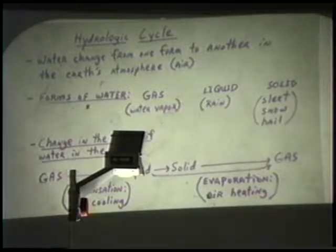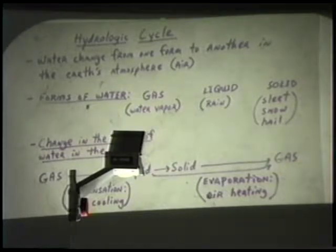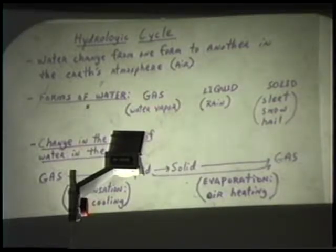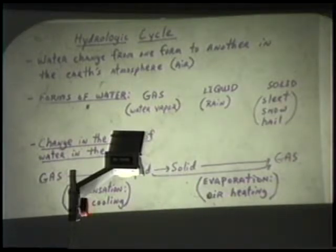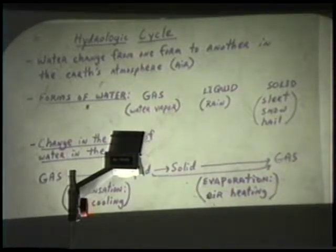When water vapor changes from a gas to a liquid, you have clouds being developed. As clouds develop, with further atmospheric cooling, you have some form of precipitation. This is the first stage of the hydrologic cycle. The second stage is when water vapor changes from a gas to some type of solid. As the air cools, the rate of cooling can be so great that water vapor will be transformed directly from a gas to a solid — that is, hail, sleet, or snow.